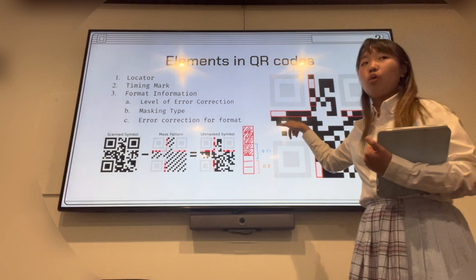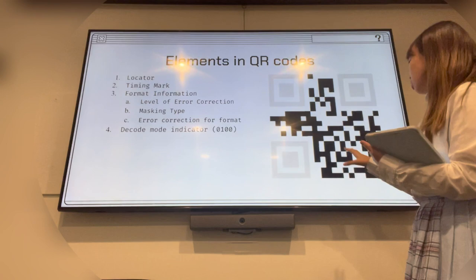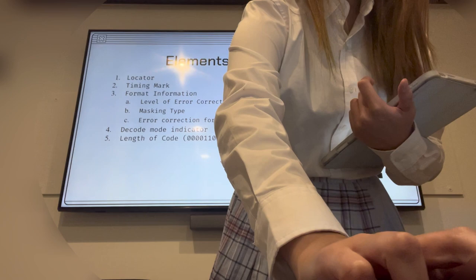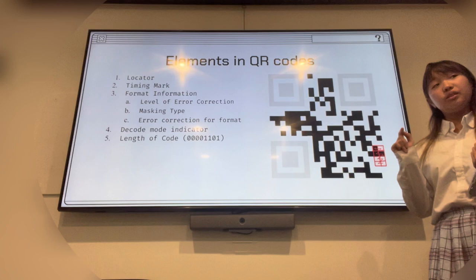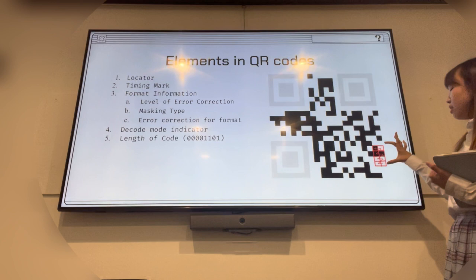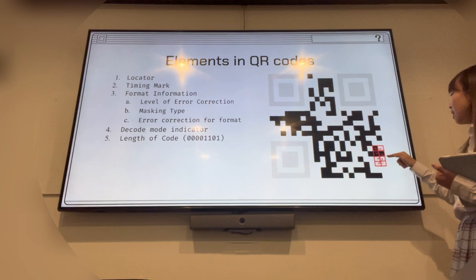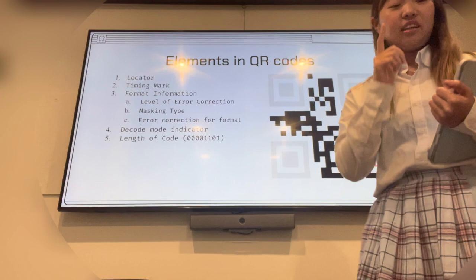Next is decode mode indicator. There are four decode modes in QR code: numeric, alphanumeric, byte, and Kanji. It's all just decided by these four squares. Next is length of code, which I'm going to explain with how to read QR code. QR code we can read by going right down to up in a zigzag pattern. Since we're in byte mode, we're going to read all the codes in byte, which is 8-bit. Here we can read that it's 00000001101, which is 13, and there will be 13 code right here.